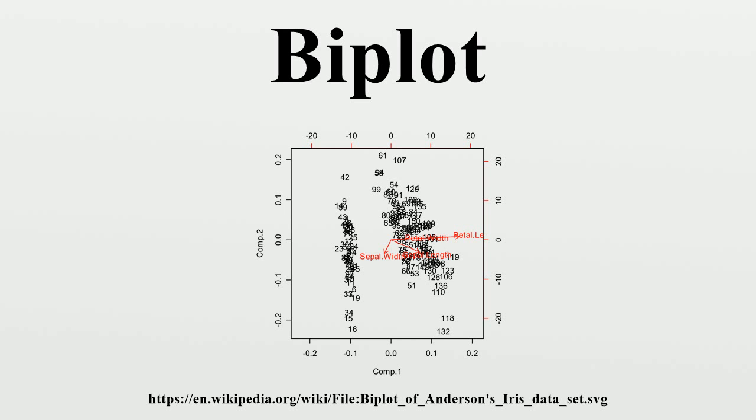Samples are displayed as points while variables are displayed either as vectors, linear axes, or non-linear trajectories. In the case of categorical variables, category-level points may be used to represent the levels of a categorical variable. A generalized biplot displays information on both continuous and categorical variables.